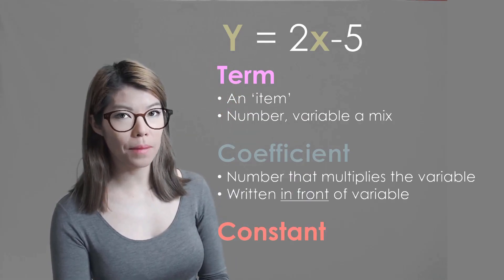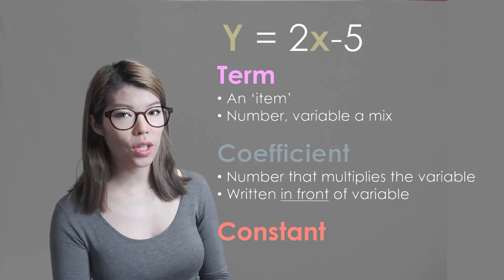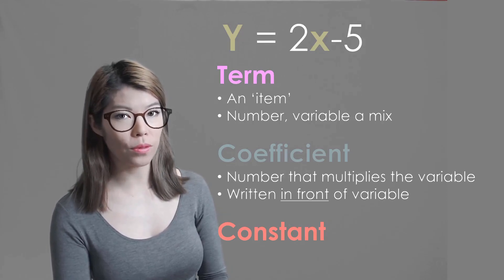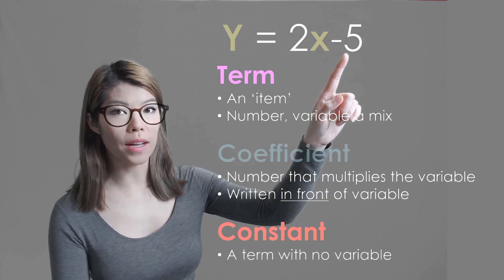Constant. What does constant mean? It means that it doesn't change. So it's just a number with no variable. So in this case our constant is minus 5.